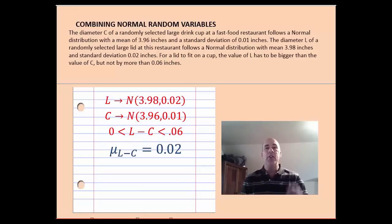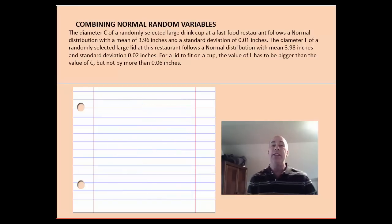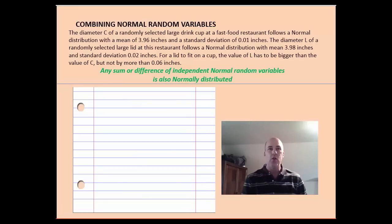Standard deviation, even though I'm still subtracting distributions, variances add. So, I've added the variances here, I take the square root of that and I have the standard deviation of the difference between lids and cups. One last little piece I need here though, very important fact, is that if both distributions are approximately normal, any sum or difference of independent normal random variables is also normally distributed.